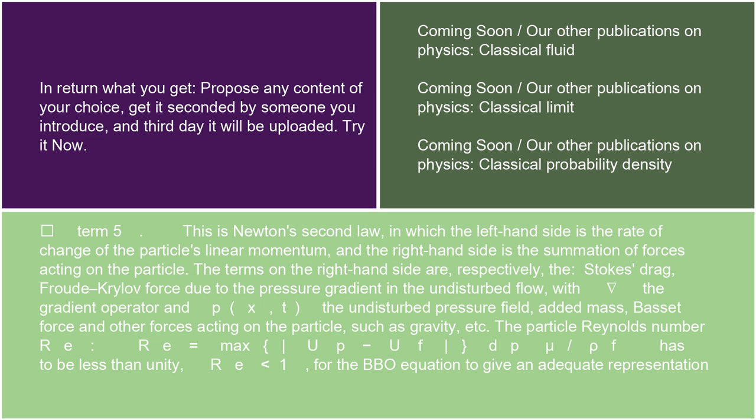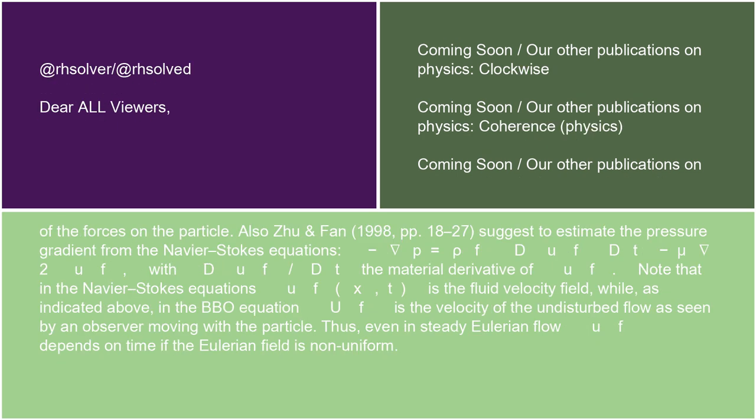for the BBO equation to give an adequate representation of the forces on the particle. Also, Zhu and Fan (1998, pages 18-27) suggest to estimate the pressure gradient from the Navier-Stokes equations: -∇p = ρf duf/dt - μ∇²uf, with duf/dt the material derivative of uf.